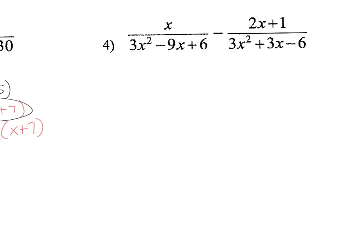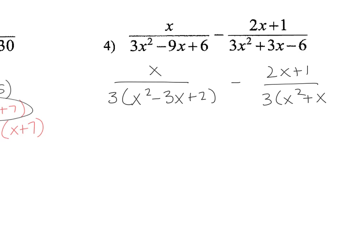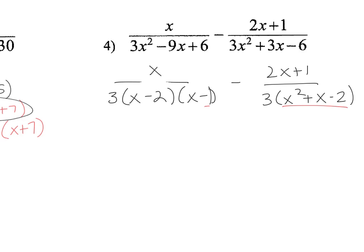And then the next one, I'm going to factor out the denominators again. So this turns into 3 times x squared minus 3x plus 2 minus 2x plus 1 times 3x squared plus x minus 2. Both trinomials can be factored further: the first turns into x minus 2 times x minus 1, and the second turns into x plus 2 times x minus 1. They both have x minus 1 and 3 in common.